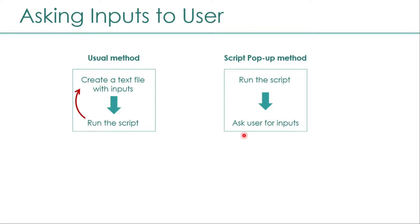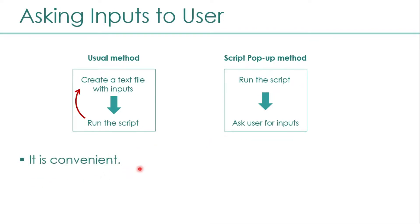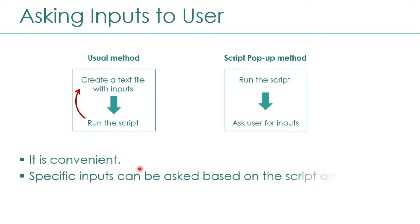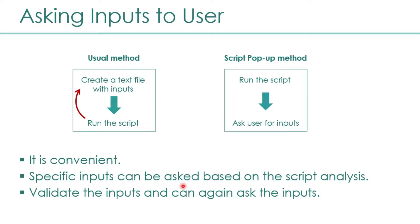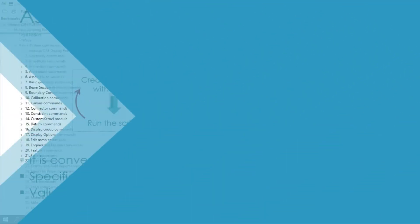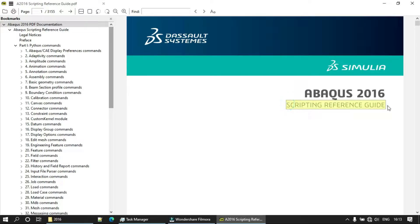This method is very convenient because many times a script has to ask for particular inputs in order to run properly. For example, if an error happens and some input has to be taken from the user, like choosing a particular method, we can ask for that input in between. We can also validate these inputs and ask again if the user provides wrong input. Doing the same thing with a text file would be very cumbersome.